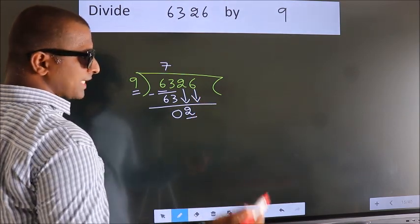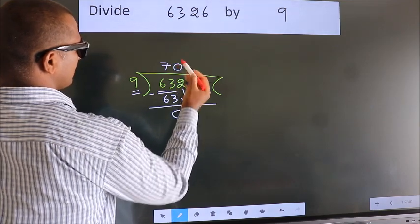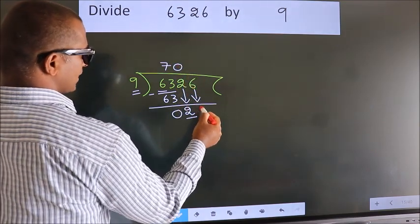And the rule to bring down the second number is put 0 here. Then only we can bring down this number.